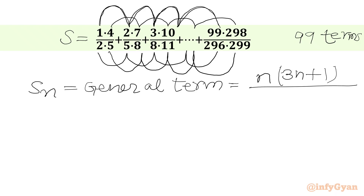In the denominator, 5 is 3 times 2 minus 1, 8 is 3 times 3 minus 1, and 296 is 3 times 99 minus 1. When the numerator has 7 as the second term, 8 is in the denominator — as in 7 over 8, 10 over 11 — so there is an increment of 1. We add 3N plus 1 plus 1 to get 3N plus 2.